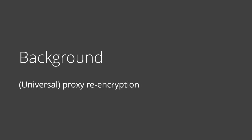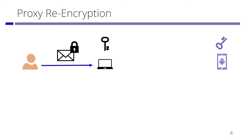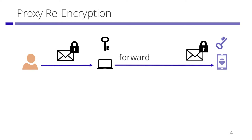First, I introduce standard proxy re-encryption. Let's consider the following scenario. Alice sends an encrypted email to Bob. Bob is on vacation, so he wants to forward emails to Chris during his vacation. However, Chris cannot decrypt the encrypted email since Chris does not have Bob's decryption key. Proxy re-encryption solves this problem.